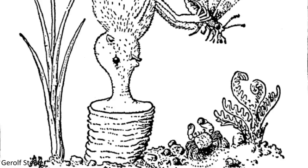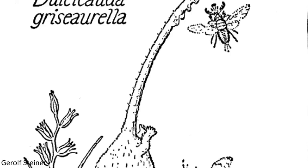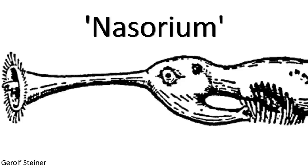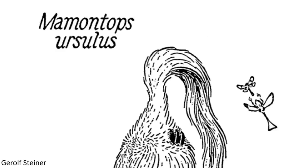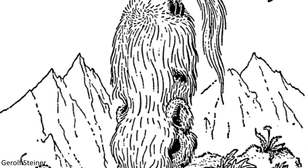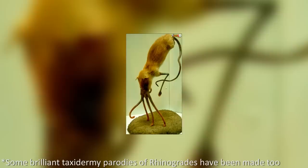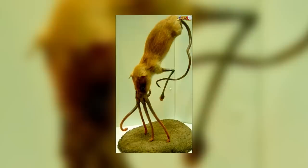The order Rhinogradentia contained some pretty remarkable organisms too, with over 100 different species documented in the publication. The most notable feature of these animals was a characteristic known as the Nasorium — a nose-like piece of anatomy that had evolved to perform all sorts of various tasks amongst the many species, such as locomotion and different feeding methods. All these fantastic Snouters had originally evolved from a single shrew-like ancestor that found its way to the island chain, and in this way the Rhinogrades are a great way of illustrating how animals can evolve in strange ways in island environments, which was apparently Steiner's initial intention.